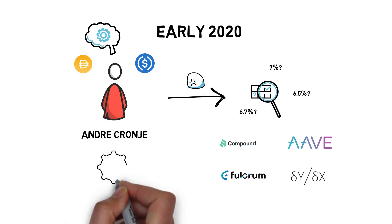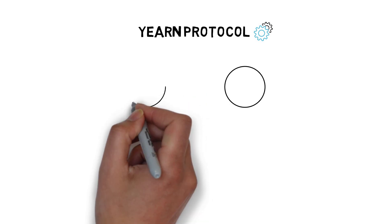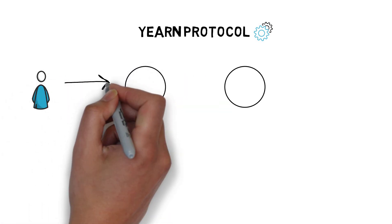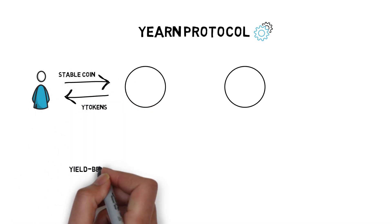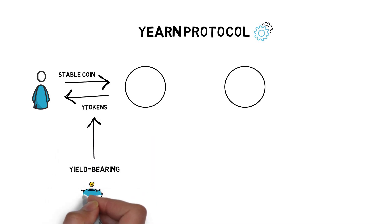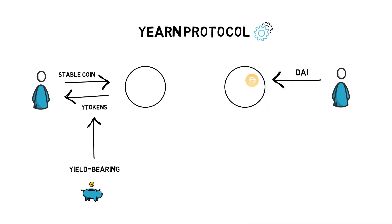So Andre started coding the first version of the Yearn protocol to automate the whole process of choosing the most optimal strategy for his stablecoins. The protocol, in essence, creates a pool for each stablecoin. By depositing a stablecoin to a pool, the user receives Y tokens that are yield-bearing equivalents of the coin that was deposited. For example, if a user deposits DAI, the protocol issues yDAI.